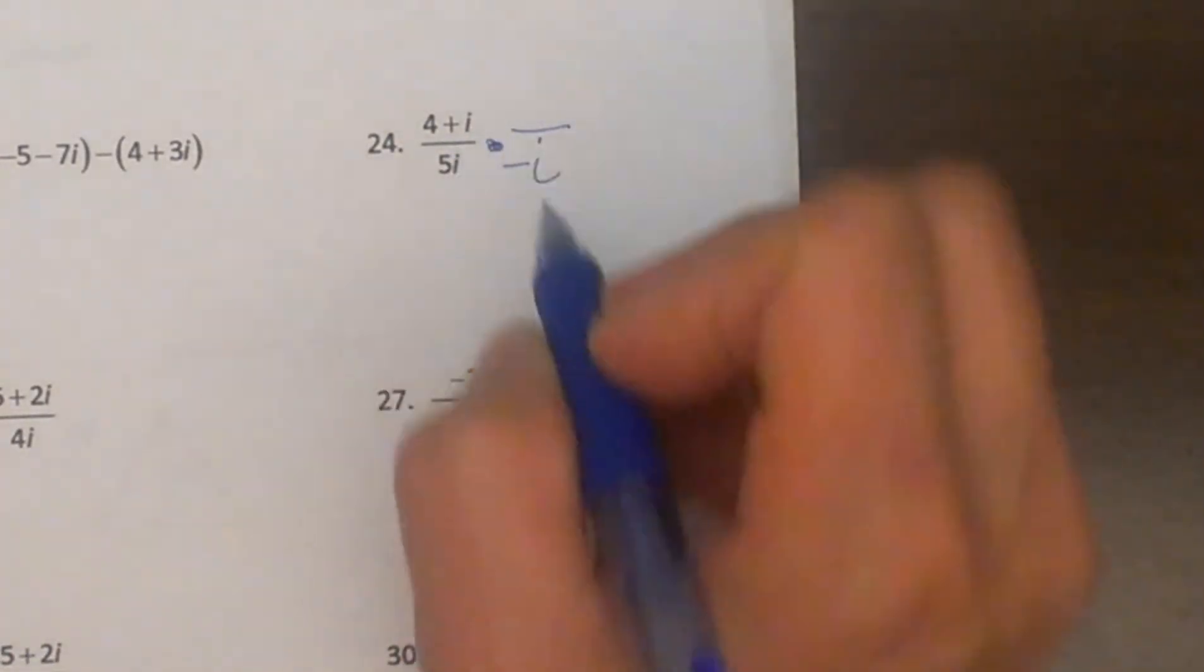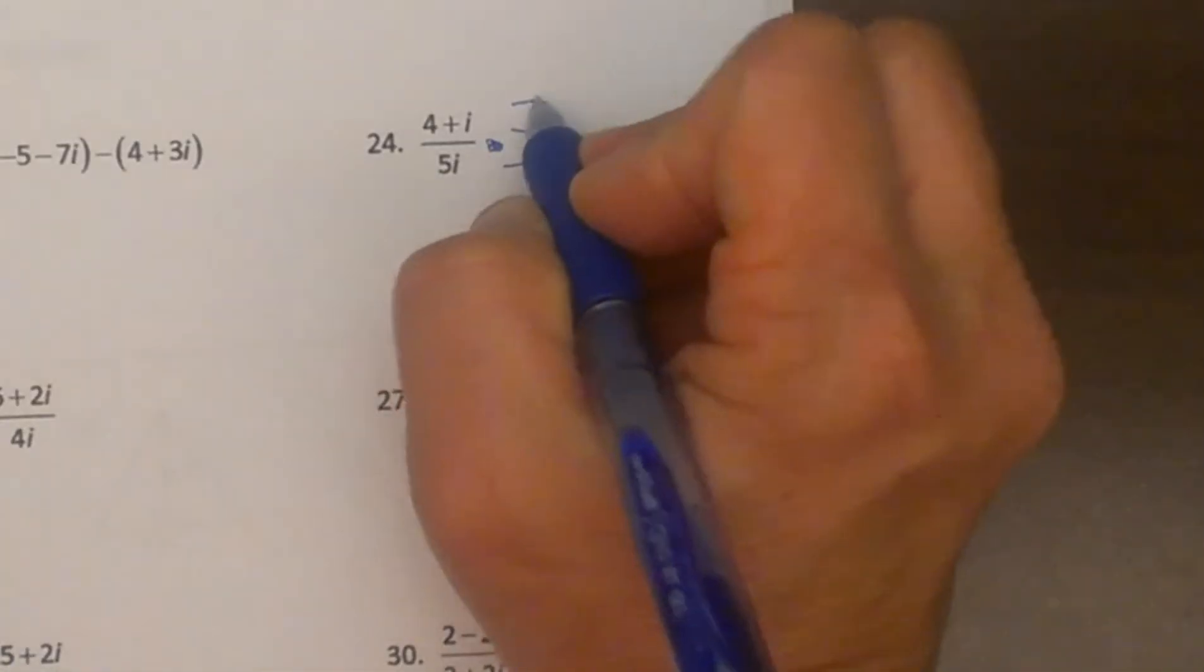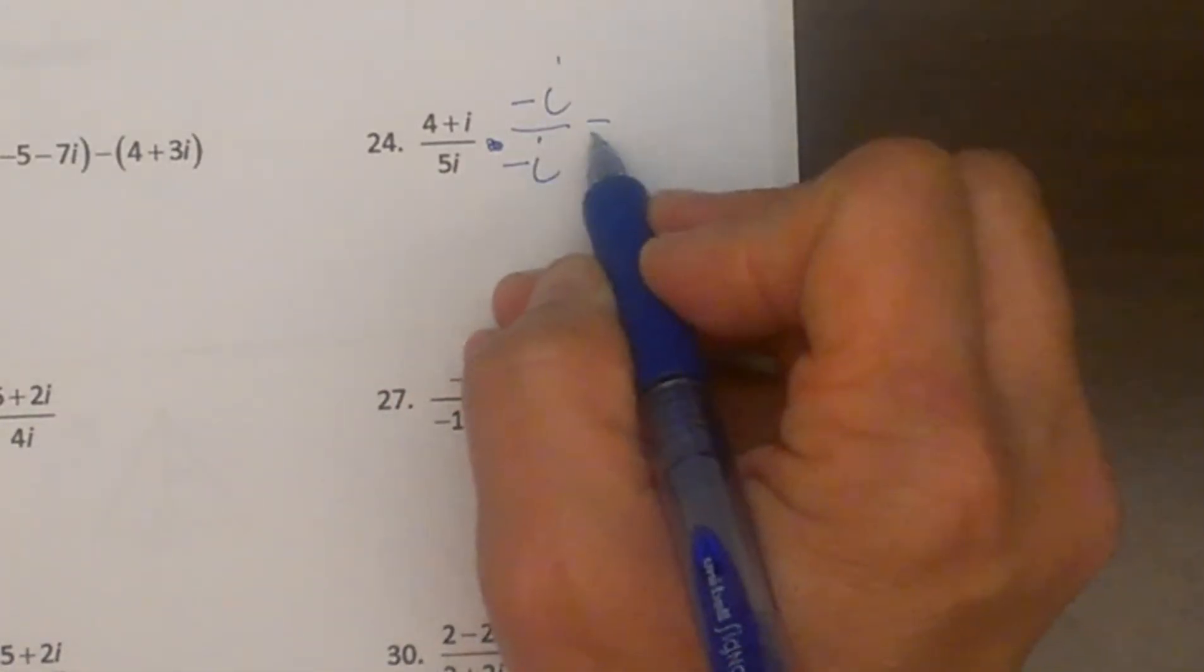When we have a monomial, the easiest thing to do is just multiply by either i or negative i, the opposite sign of what you see. So I am going to multiply the top by negative i.